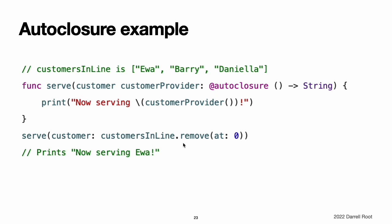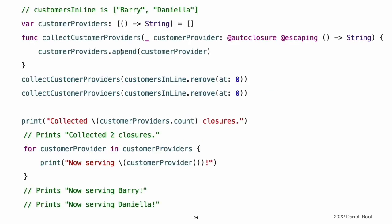Note: overusing auto closures can make your code hard to understand. The context and function name should make it clear that evaluation is being deferred. If you want an auto closure that is allowed to escape, use both the @autoclosure and @escaping attributes. The @escaping attribute is described earlier in Escaping Closures. In this code, instead of calling the closure passed to it as its customerProvider argument, the collectCustomerProviders function appends the closure to the customerProviders array. The array is declared outside the scope of the function, which means the closures in the array can be executed after the function returns. As a result, the value of the customerProvider argument must be allowed to escape the function's scope.